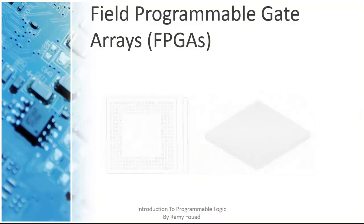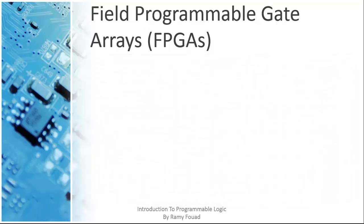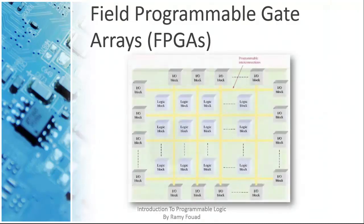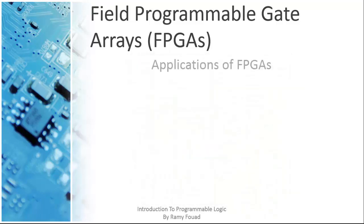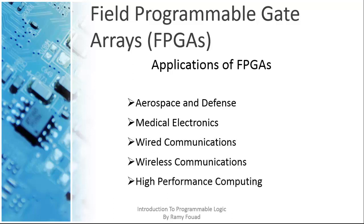FPGAs consist of logic blocks, programmable interconnections, and input/output blocks. The logic blocks in FPGAs are not as complex as the logic array blocks in CPLDs, but generally there are many more of them. Large FPGAs can have tens of thousands of logic blocks in addition to memory and other resources, and some FPGA packages can have over 1,000 input and output pins. FPGAs are used in many advanced disciplines such as aerospace and defense, medical electronics, wired and wireless communications, and high-performance computing.